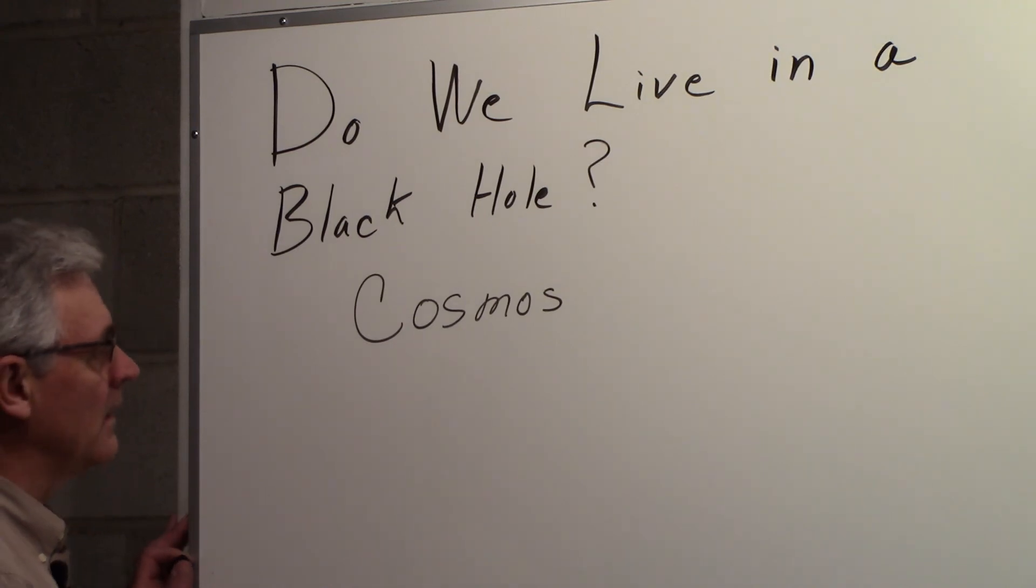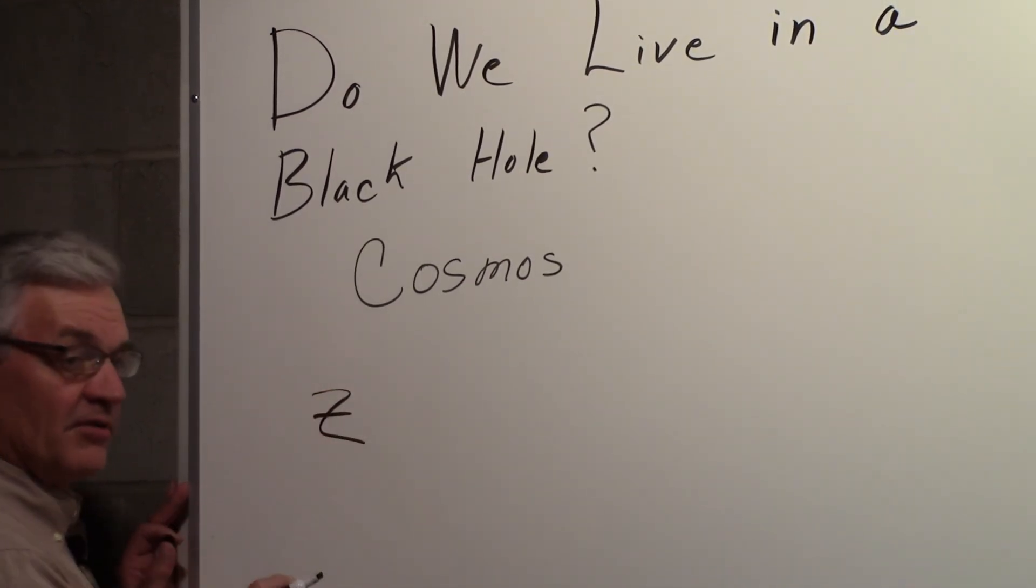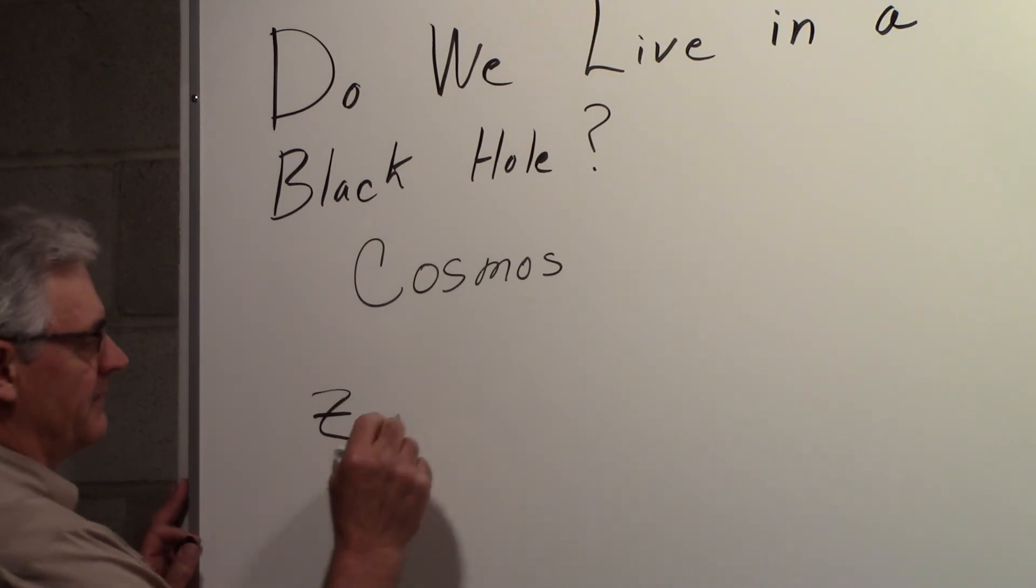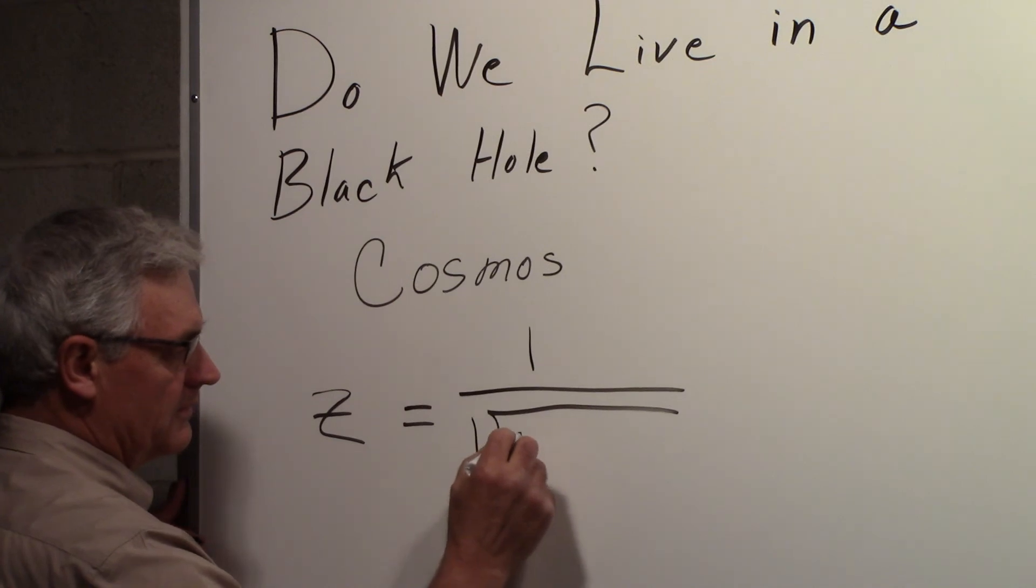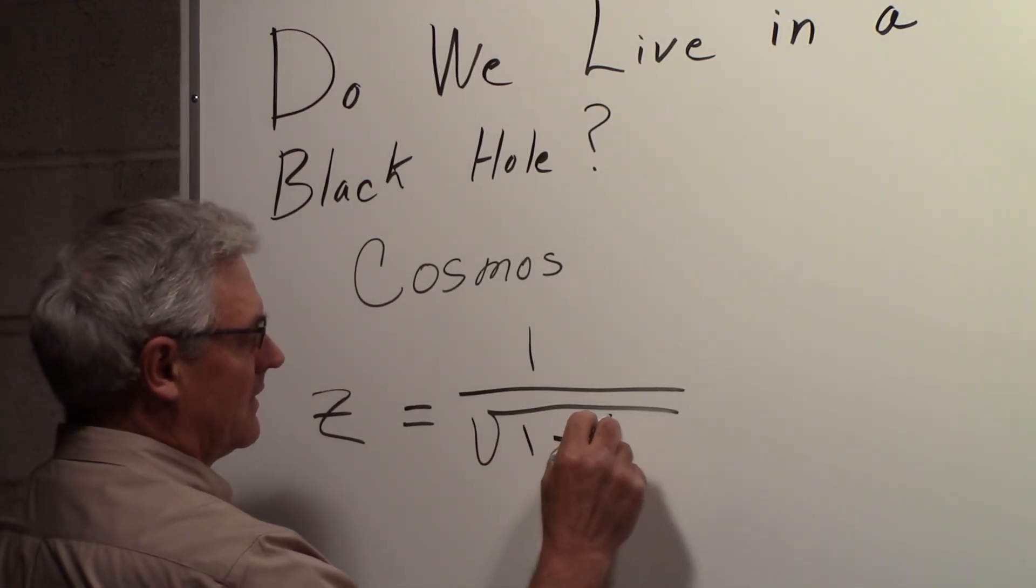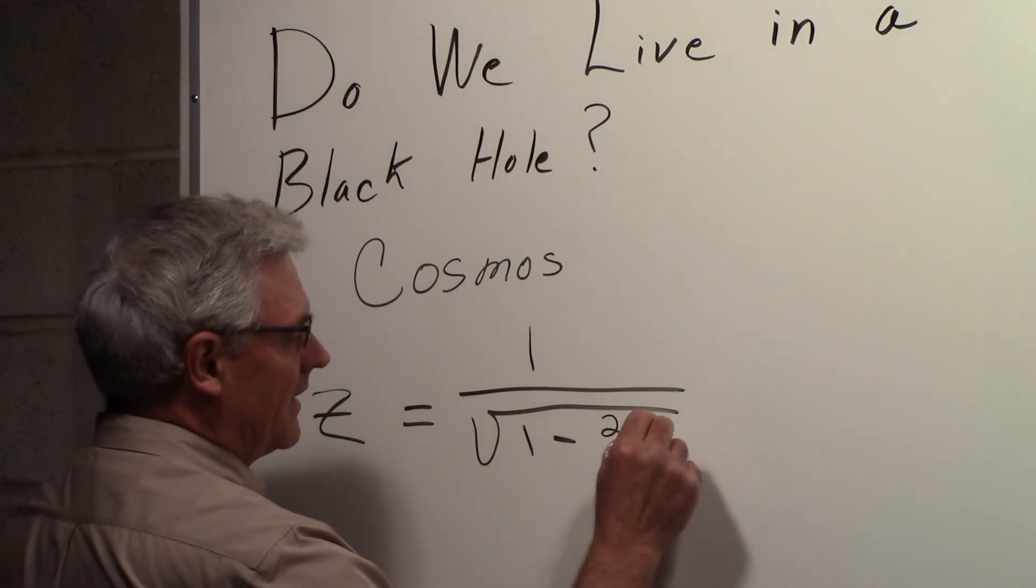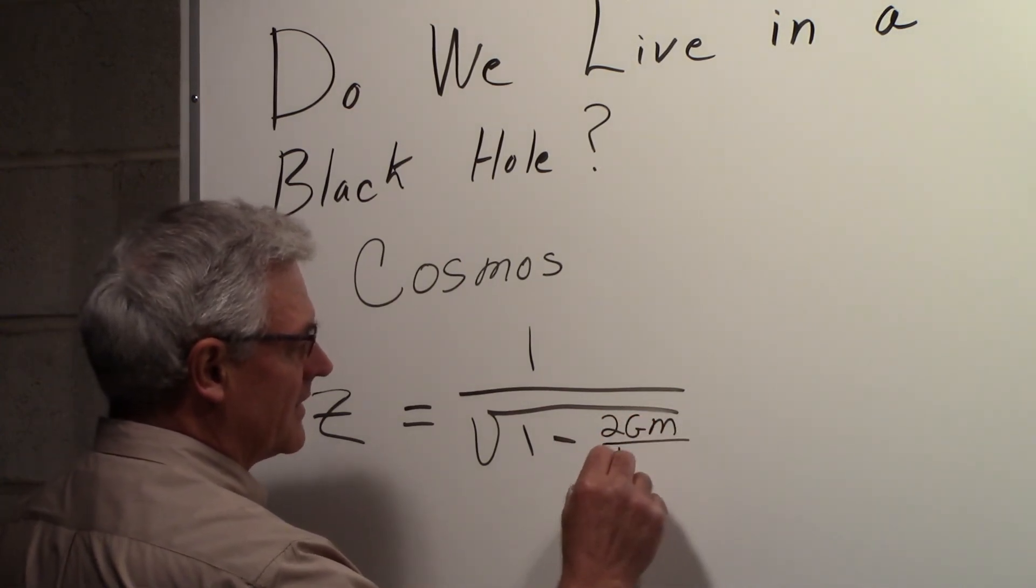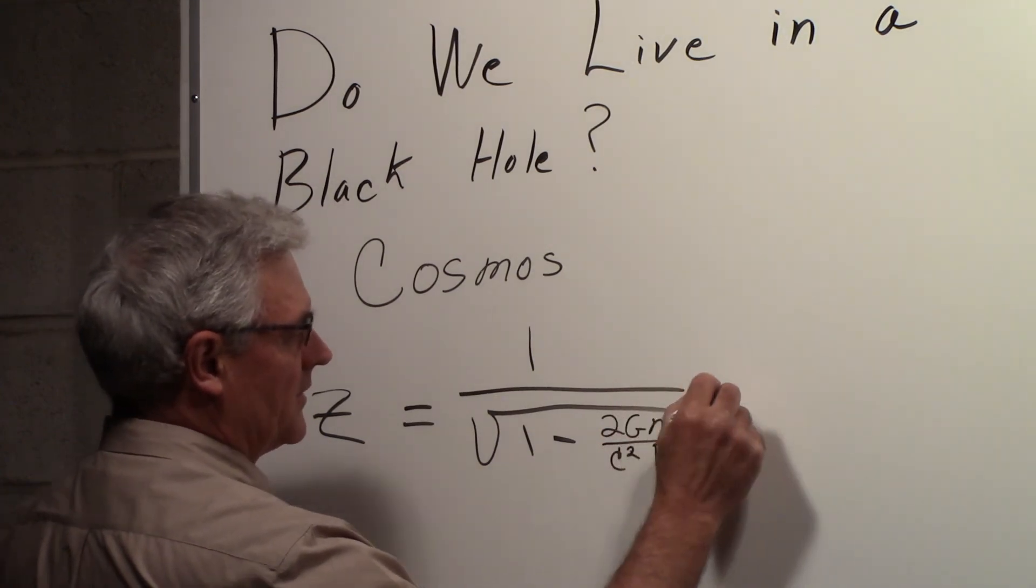It turns out that from Einstein's general relativity, you can write down an expression for the gravitational redshift, and that is equal to 1 over the square root of 1 minus 2GM over c squared R, minus 1.